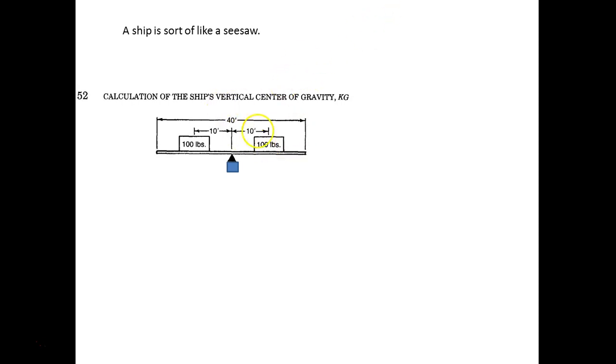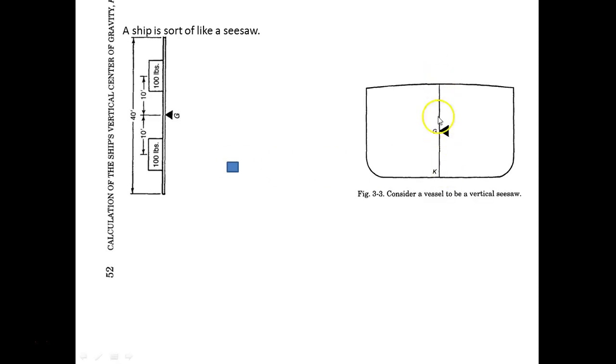A ship is, in a way, like a seesaw. You have your fulcrum, and if you have 100 pounds 10 feet to the right of that fulcrum and you put 100 pounds 10 feet to the left of the fulcrum, you're going to be at equilibrium. Now, if we put that on a vertical axis, that'd be a little bit more like a ship. This is the centerline, but instead of referencing from the fulcrum, for a lot of our calculations on the ship, we're actually going to reference from the keel.